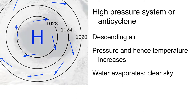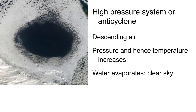This is a satellite image of such a high pressure system near the south of Australia. You can see clearly that there's a clear sky in the center of the high pressure system. This is a large system — its diameter is about a thousand kilometers.